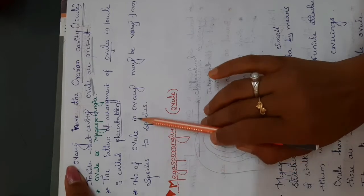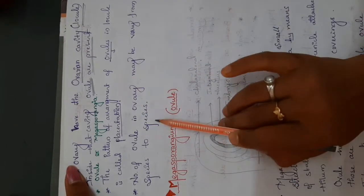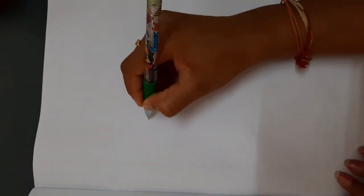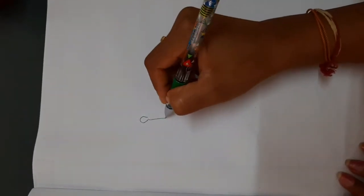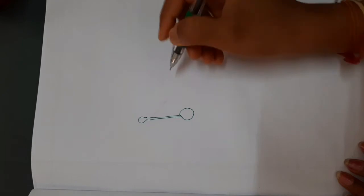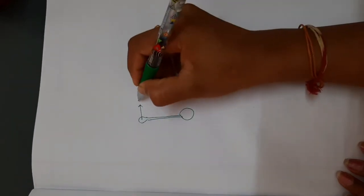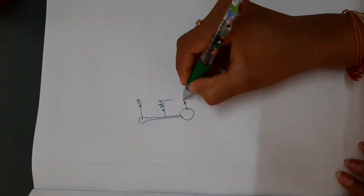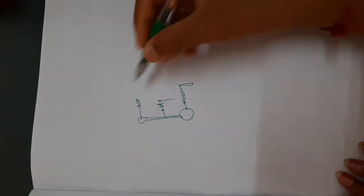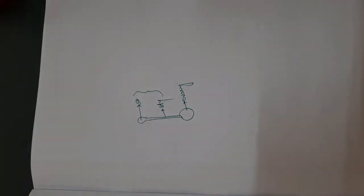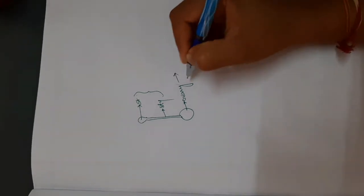The number of ovules in an ovary may vary from one species to another. I am drawing the diagram of the carpel — this is the stigma, this is the style, and this one is the ovary. The important megasporangium is present inside the ovary.